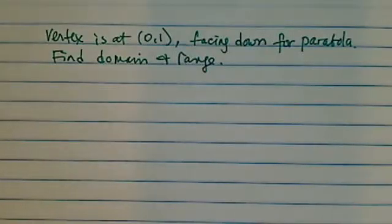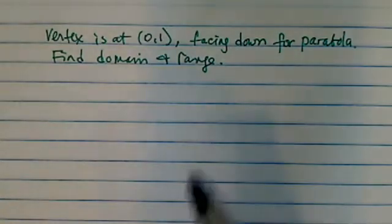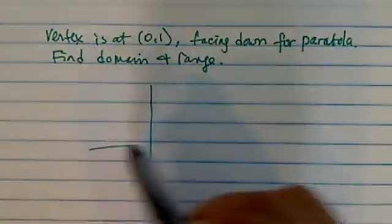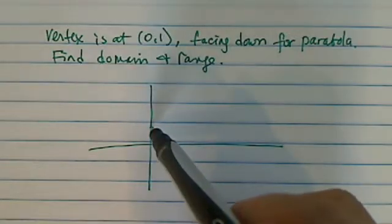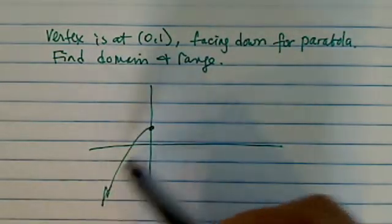We're given a vertex and parabola is facing down. We're asked to find domain and range. This is actually a pretty interesting problem. 0, 1, let's find where we are. So 0, 1 is here and facing down.